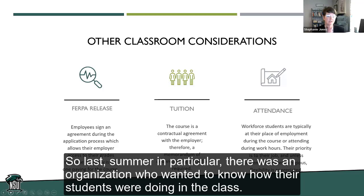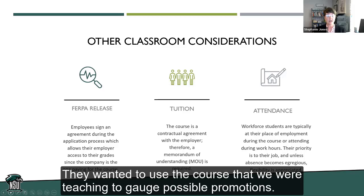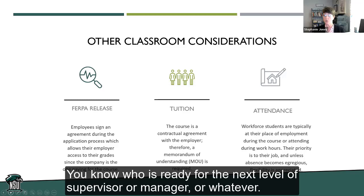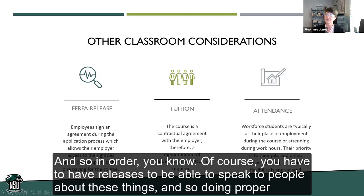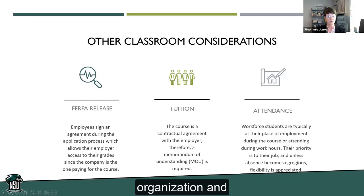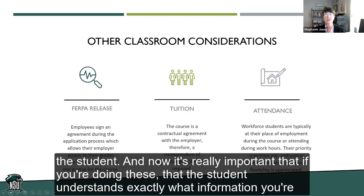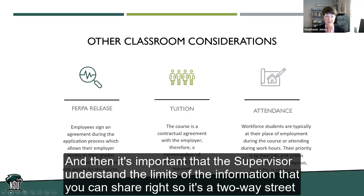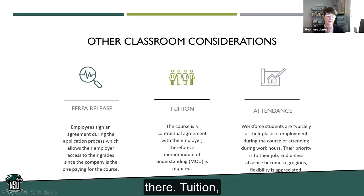Some other classroom considerations are FERPA releases. Last summer, there was an organization that wanted to know how their students were doing in class — they wanted to use the course to gauge possible promotions, determining who was ready for the next level of supervisor or manager. You have to have releases to speak to people about these things. It's important that the student understands exactly what information you're going to be sharing with their supervisor, and that the supervisor understands the limits of the information you can share. It's a two-way street.